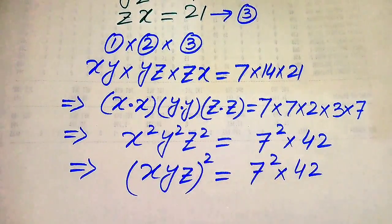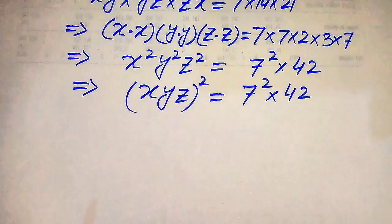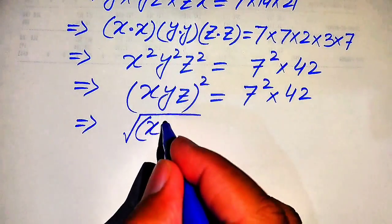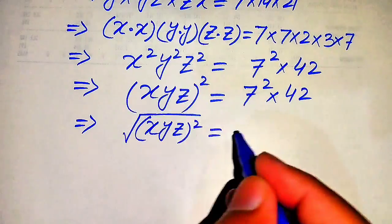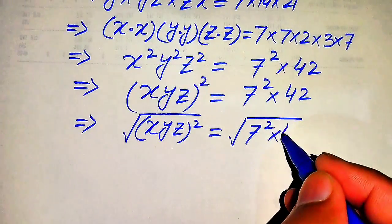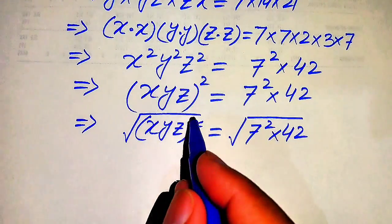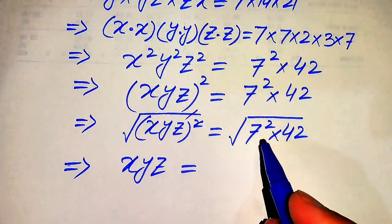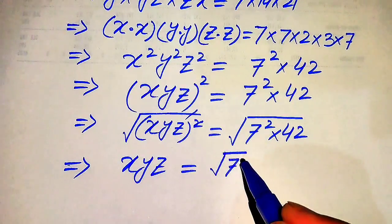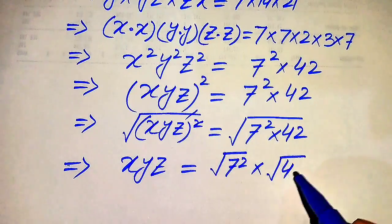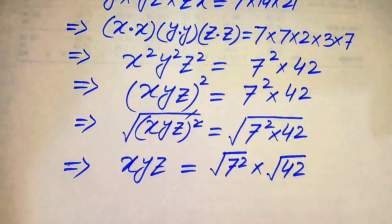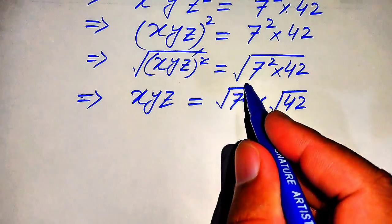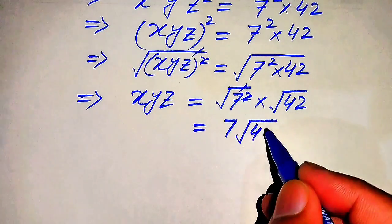We write x squared times y squared times z squared in common form as (xyz) squared equals 7 squared multiplied by 42. Now we remove the square sign on the left hand side by taking the square root on both sides. We get xyz equals the square root of 7 squared multiplied by 42, which simplifies to 7 times the square root of 42.